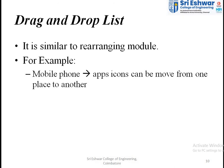The drag and drop list is used in mobile phones today. It is similar to rearranging modules. For example, on an Android mobile phone, icons are arranged in rows and columns. To move an icon from one location to another, you long-press the icon, it gets selected, and then you drag it to the desired location. This is the latest feature of drag and drop used in mobile phones. That is all about drag and drop — thank you for listening.